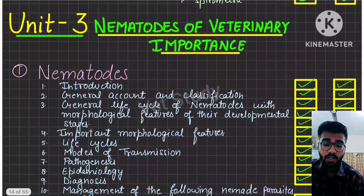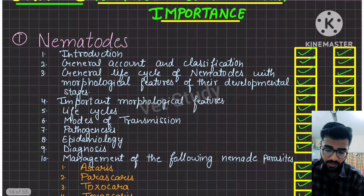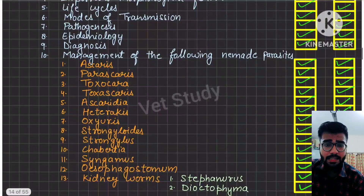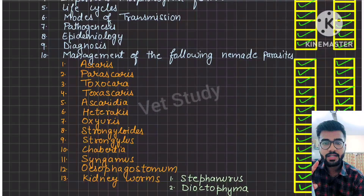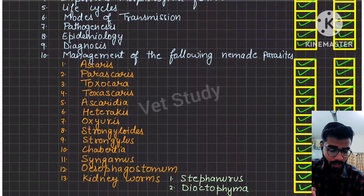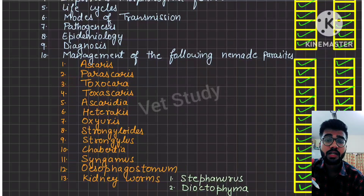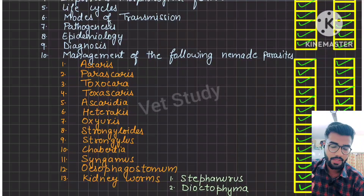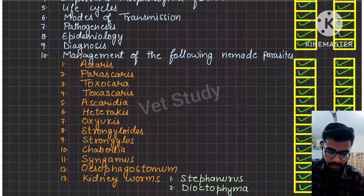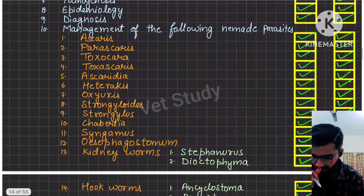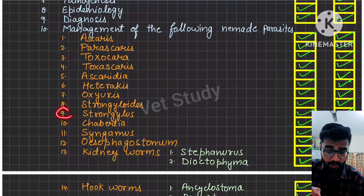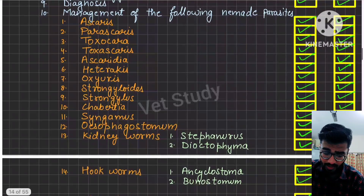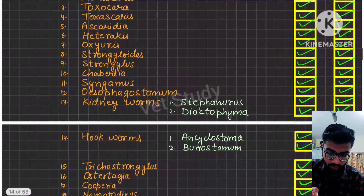Unit 3 is nematodes. Starting with Ascarids — Toxocara vitulorum and Toxocara canis are important parasites; read them properly. Ascaris itself is not important for long questions. Ascarids, Heterakis are not important long-case questions. Oxyuris is not long-case. Strongyloides is not important. Strongylus is important. Toxocara is important. Kidney worm is a long-case question and was asked in the paper.